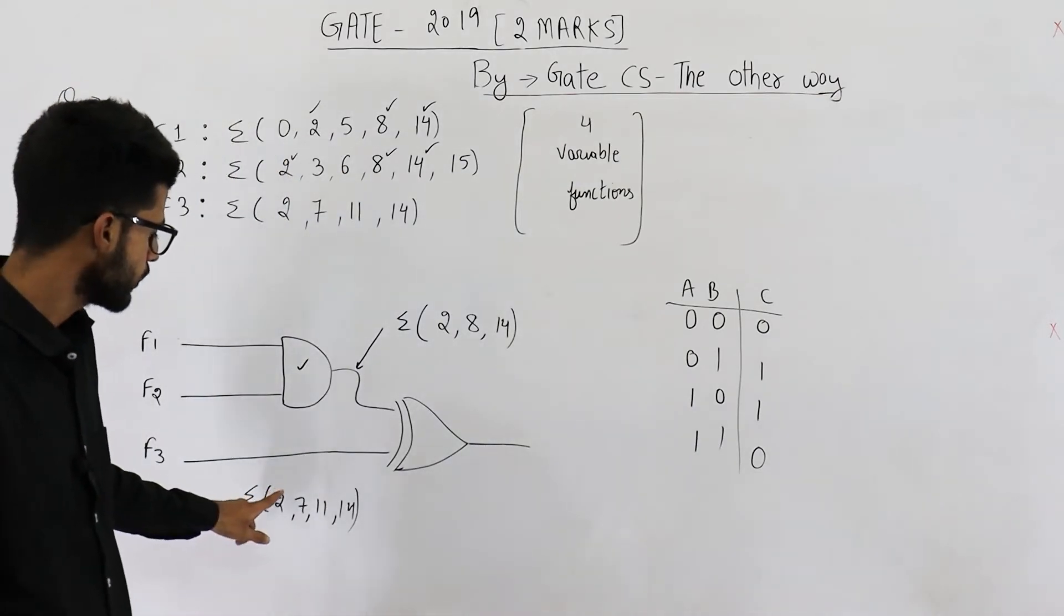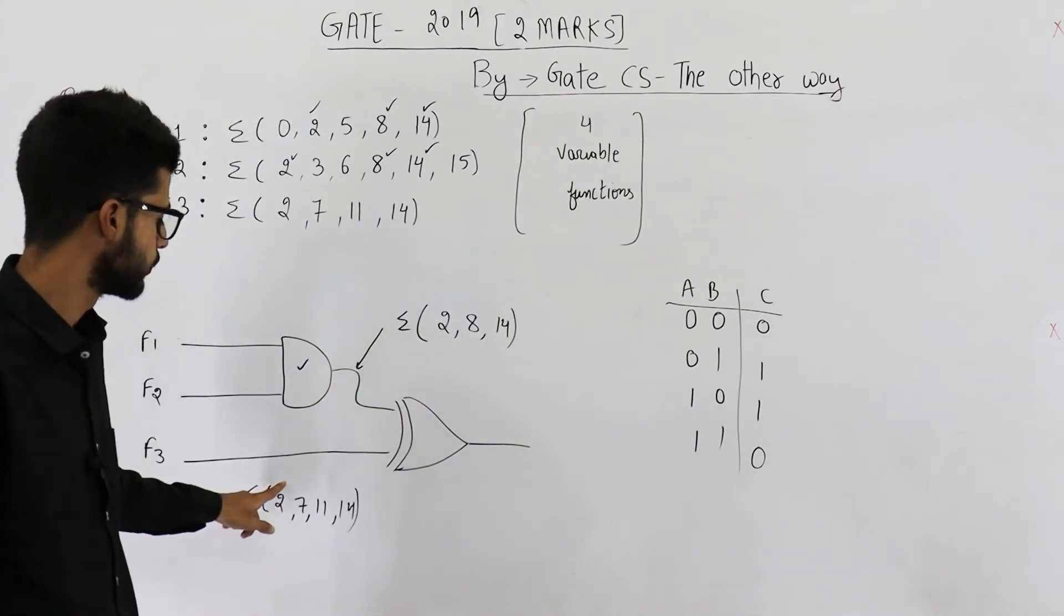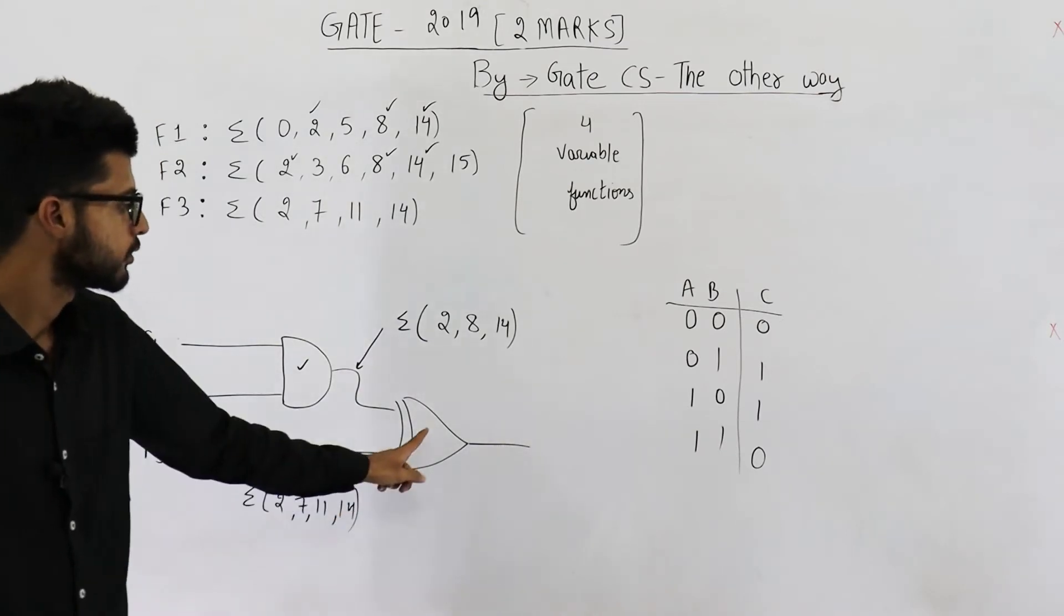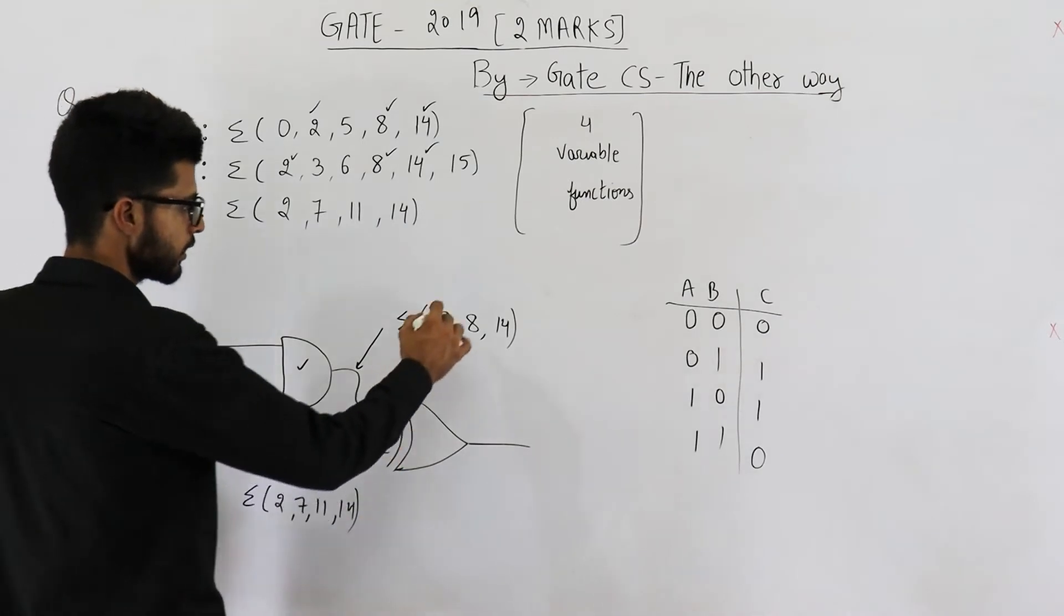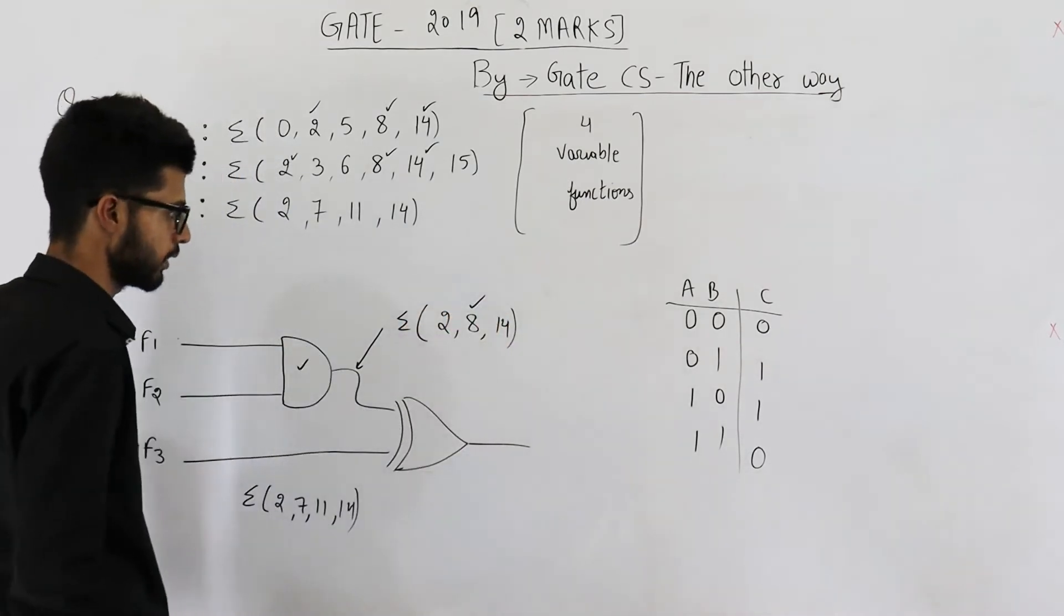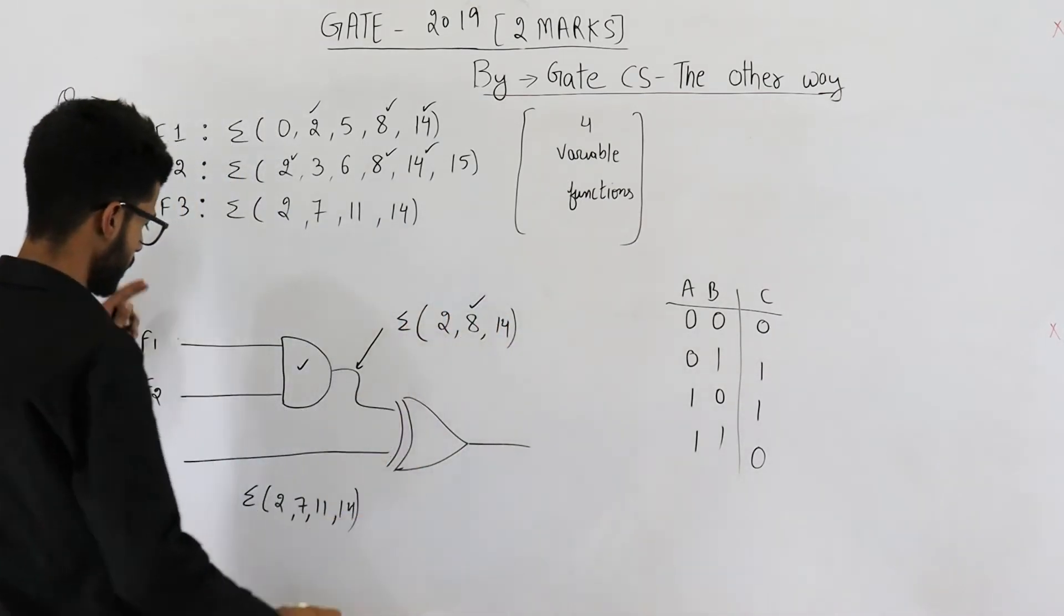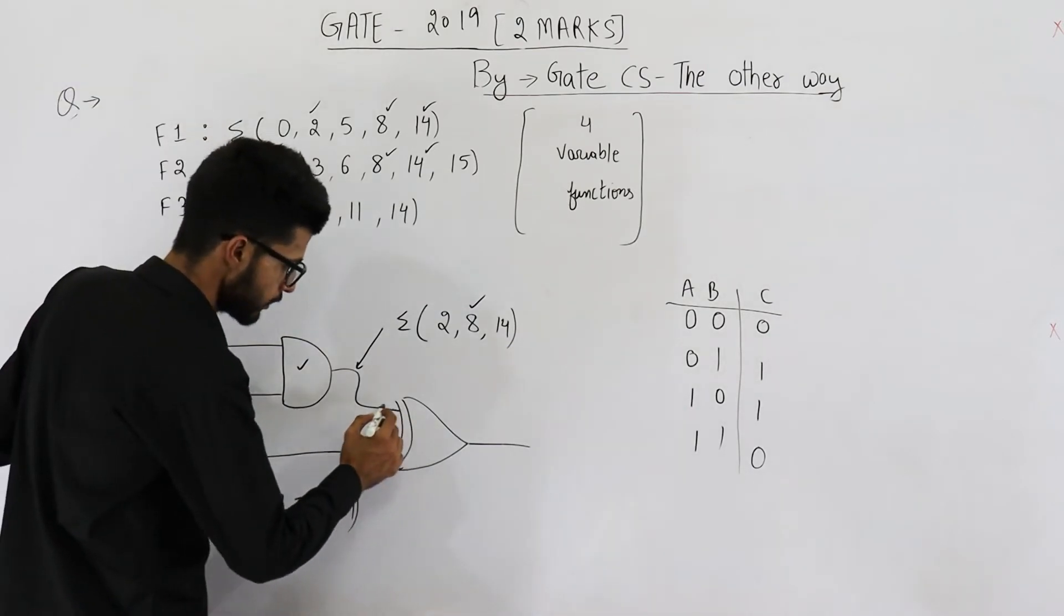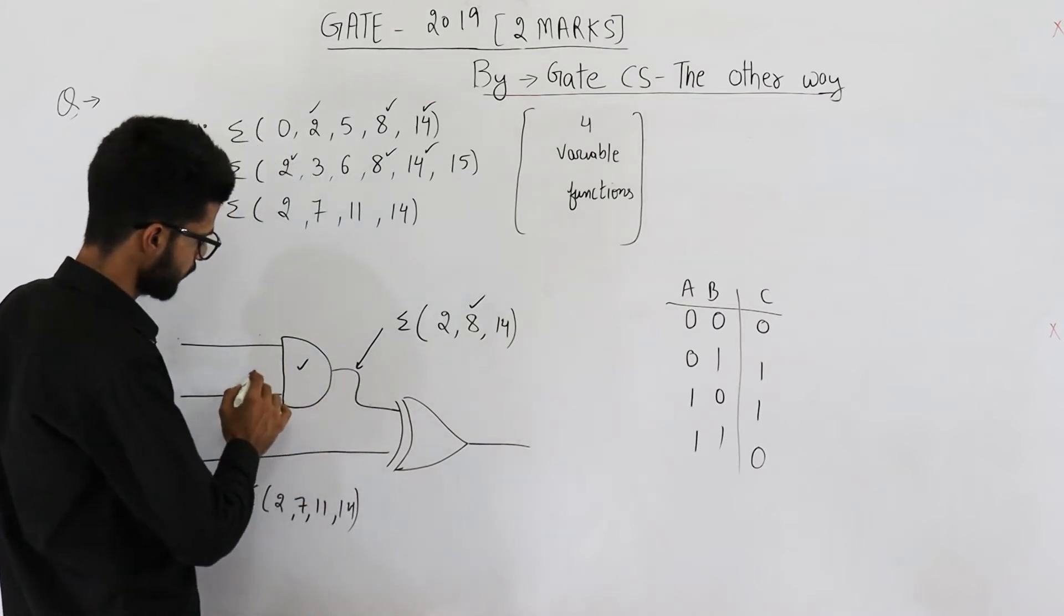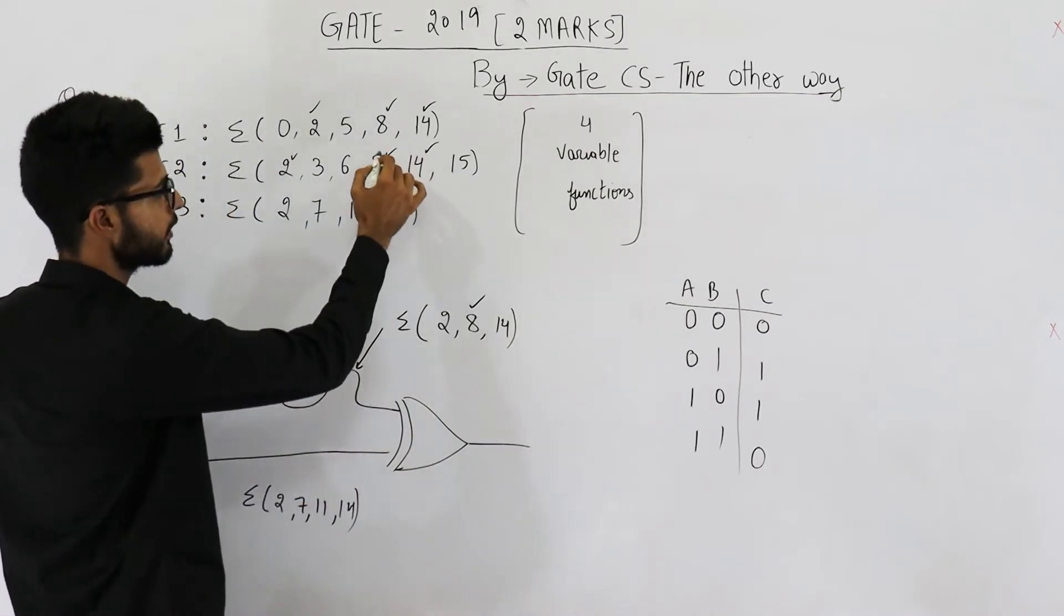That means on 2 you can see both the inputs are high. So output will be 0 in case of 2. Let's see in case of 8 what is going to happen. In case of 8 when this input to all these three functions is 8, you will get a 1 here because F1 and F2 both are high on 8.